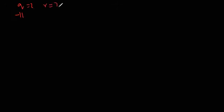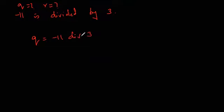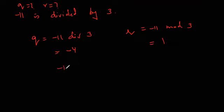Note that the remainder cannot be negative — the remainder is always greater than or equal to 0 and less than the divisor. For example, what are the quotient and remainder when −11 is divided by 3? The quotient is ⌊−11/3⌋ = −4, and the remainder r = −11 mod 3 = 1. Verification: 3 × (−4) + 1 = −12 + 1 = −11. Correct.